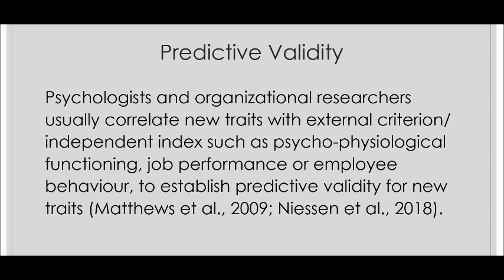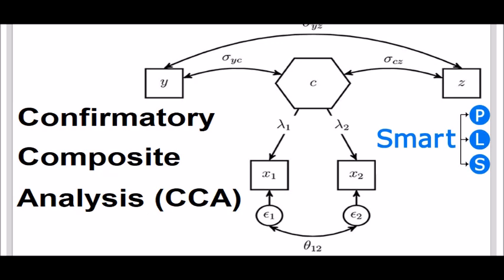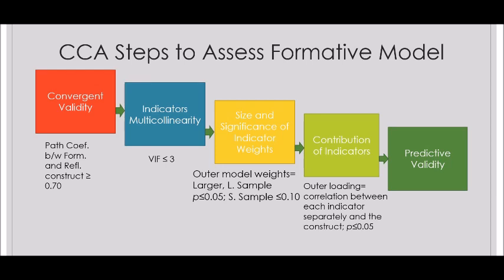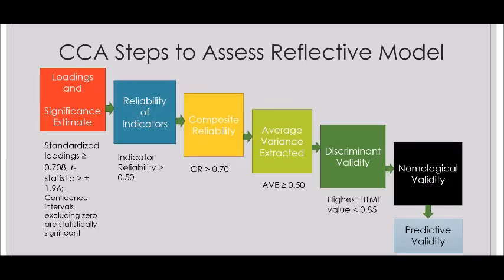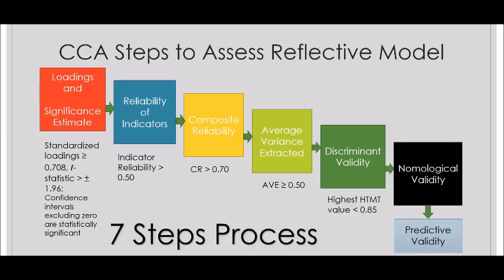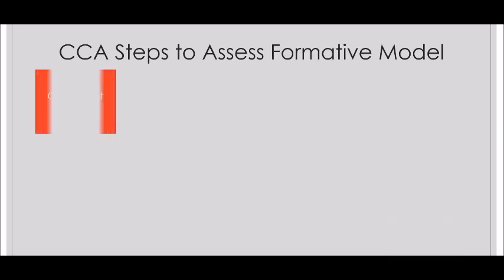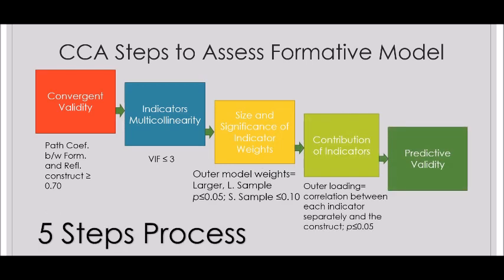So this was the method to conduct confirmatory composite analysis, CCA, as reported by Hair et al. 2020. When conducting covariance-based SEM, you assess measurement model quality using confirmatory factor analysis. But when running your model in SmartPLS, you conduct confirmatory composite analysis. There are seven steps to assess a reflective model and five steps to assess a formative model. Thank you very much for watching this video.